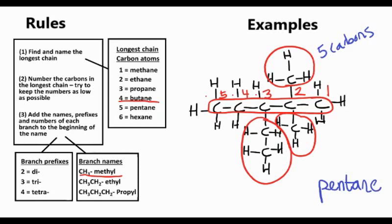And then we've got 3-ethyl, because our ethyl group's on the third carbon. Then 2,2-dimethyl. And we put the ethyl before the methyl, because E comes before M in the alphabet.